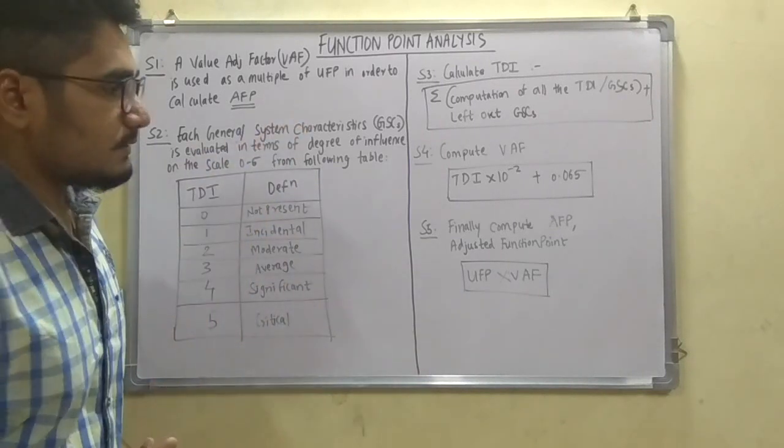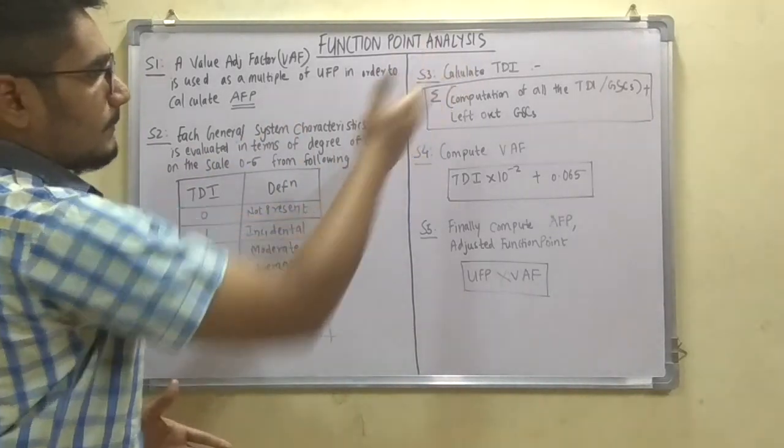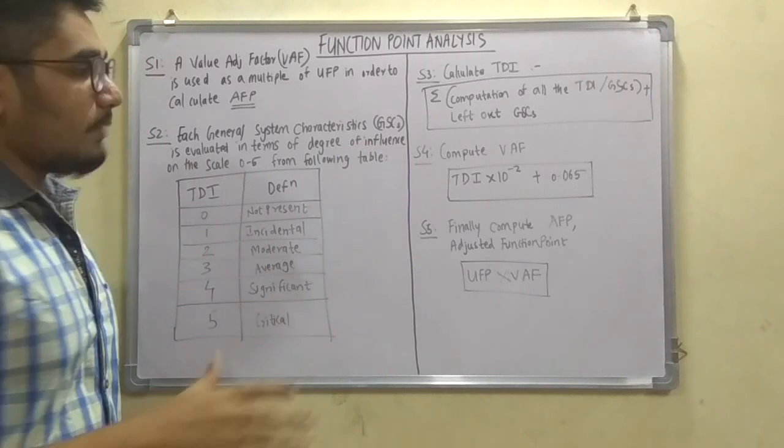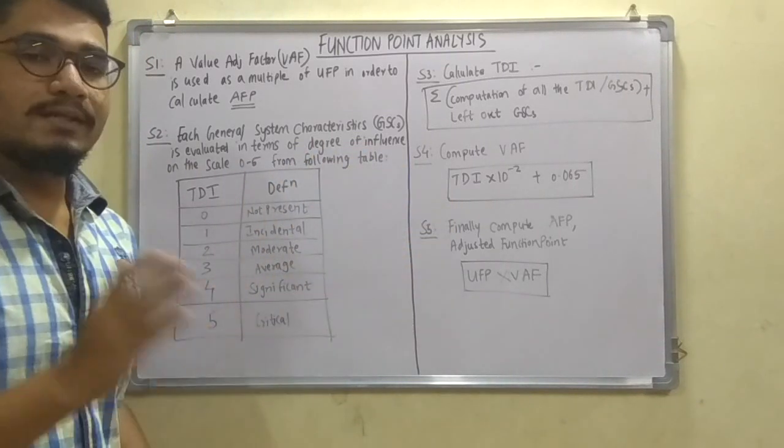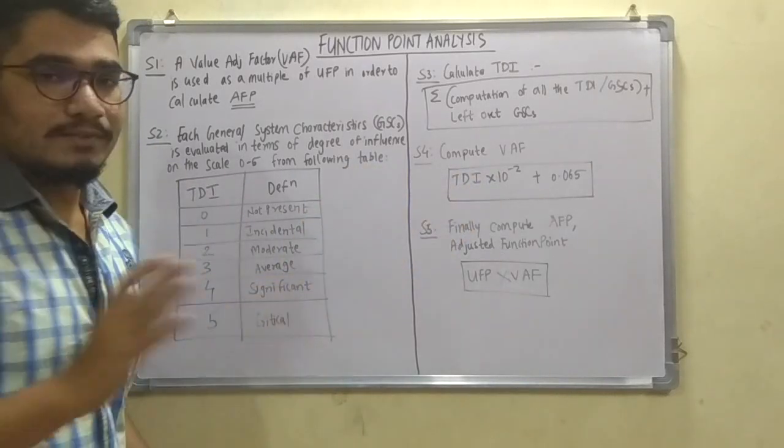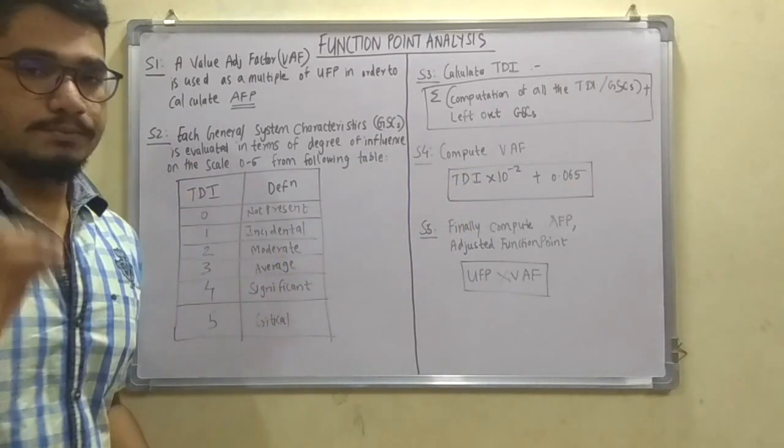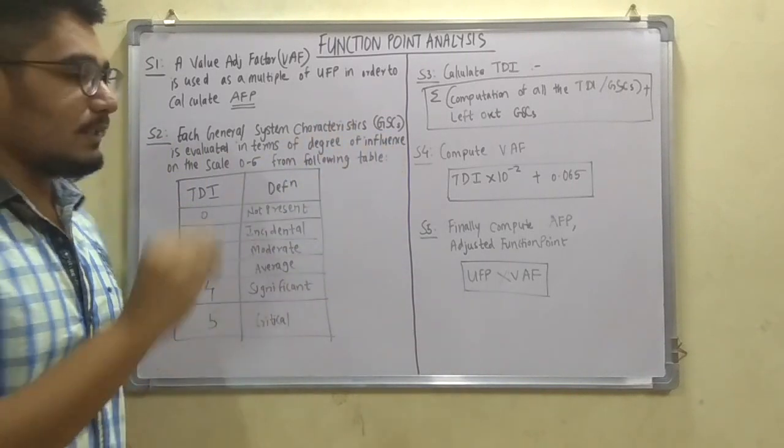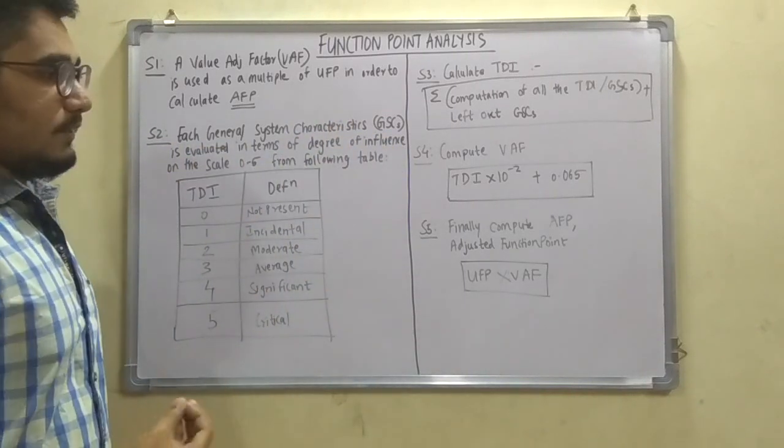Now a formula is there, that is TDI which you get from here, that is step 3, multiplied by 10 raised to minus 2 plus 0.065. Now you have to keep in mind that you don't have to play with this formula. You have to substitute the value of TDI as it is into this and just get the output of this.